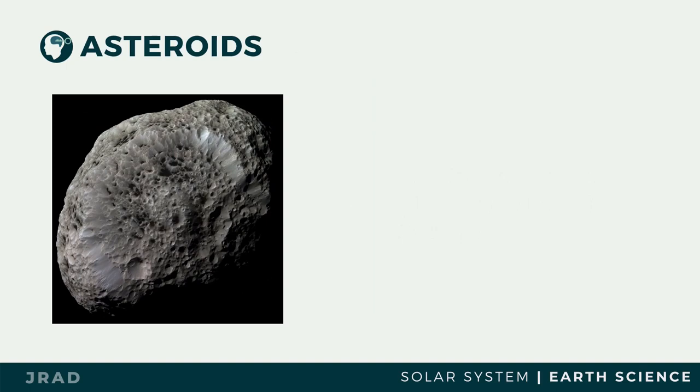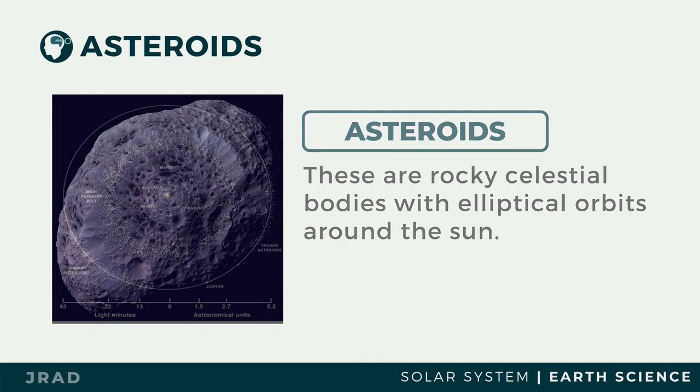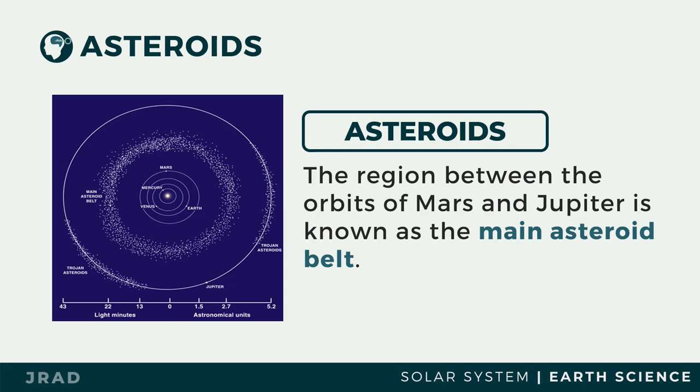Aside from the Sun, planets, and dwarf planets, there are other members of the solar system. One of these is asteroids. Asteroids are rocky celestial bodies with elliptical orbits around the Sun. Asteroids are also called planetoids by scientists because they are more like planets and moons. The region between the orbits of Mars and Jupiter is known as the main asteroid belt.